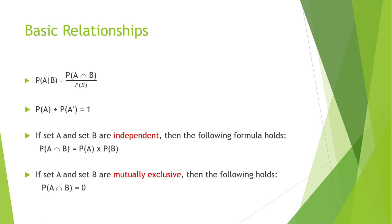The basic relationships used in formulas: the probability of A given B equals the probability of A and B divided by the probability of B. Next, the probability of A plus the probability of not A equals 1 — if you add A and everything that's not A, you always get 1. If set A and set B are independent, then probability of A and B equals probability of A multiplied by probability of B. If set A and set B are mutually exclusive, then probability of A and B equals 0.